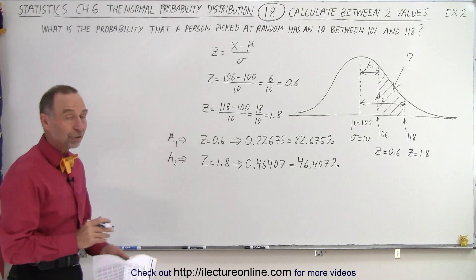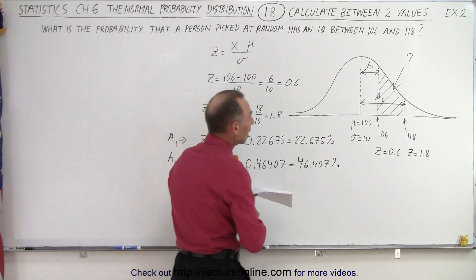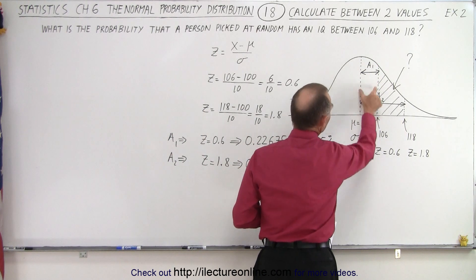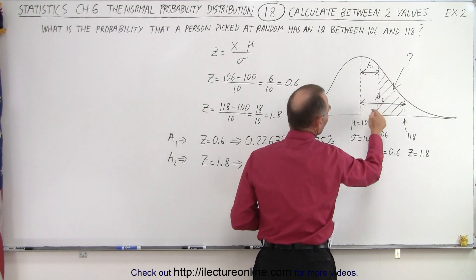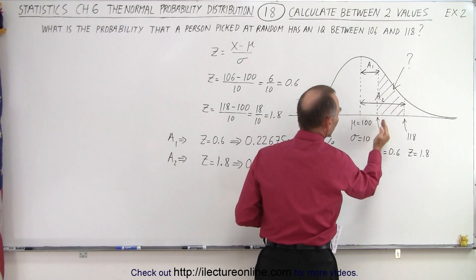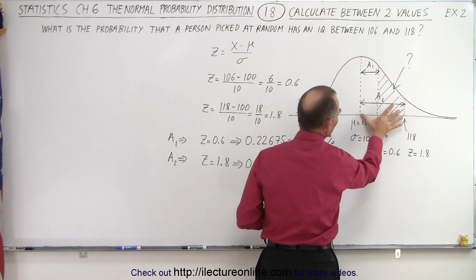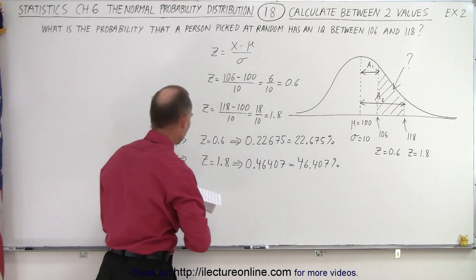So now we have the two areas. A1 is the area right here. A2 is this entire area. So now to find the difference between the two from 106 to 118 we take the total area and subtract A1 from it.